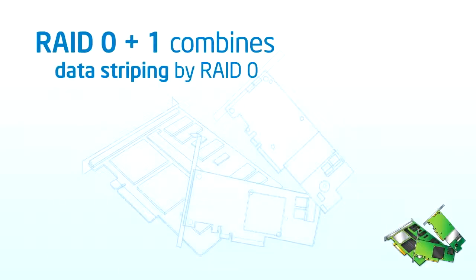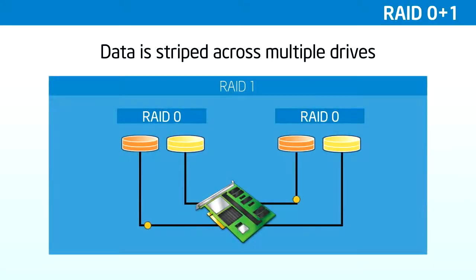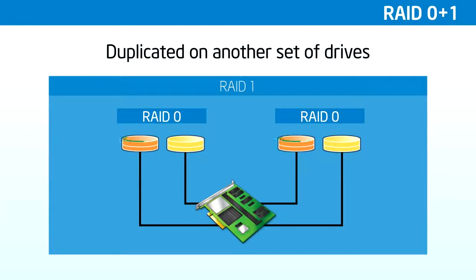In RAID 0 plus 1, data is striped across multiple drives and mirrored to a duplicate set of drives. RAID 0 plus 1 is similar to RAID 10, with the exception that it cannot tolerate two simultaneous disk failures unless the second failed drive is from the same stripe as the first. That is, once a single drive fails, each of the disks in the other stripe is a single point of failure. Also, once the single failed drive is replaced, all the disks in the array must participate in the rebuild. This illustration of RAID 0 plus 1 shows two groups of striped disks that are mirrors for redundancy.